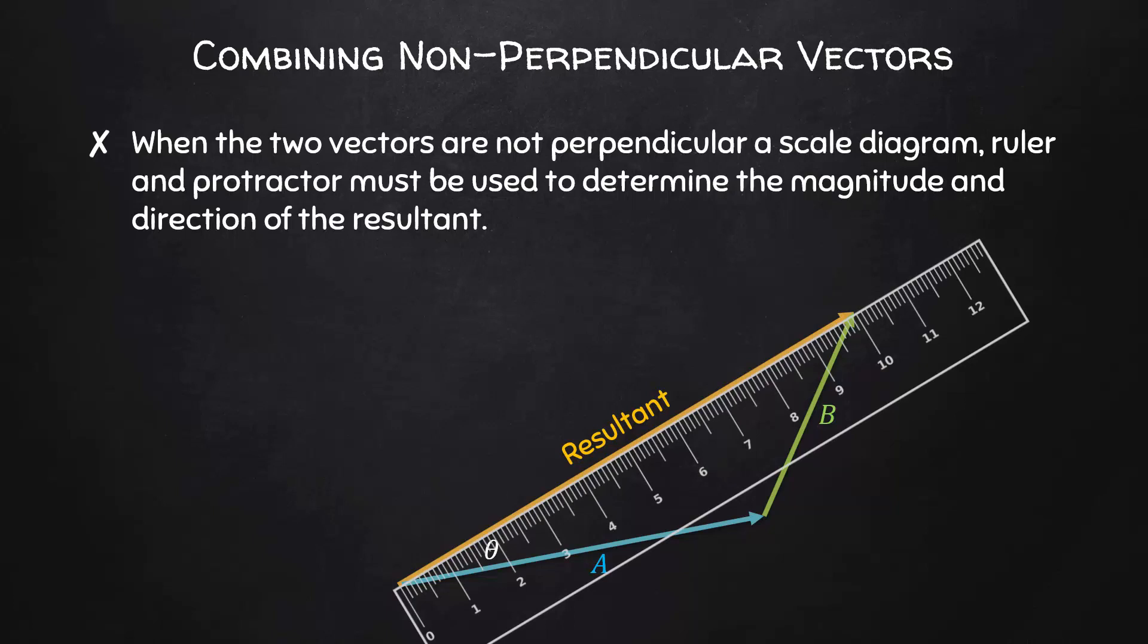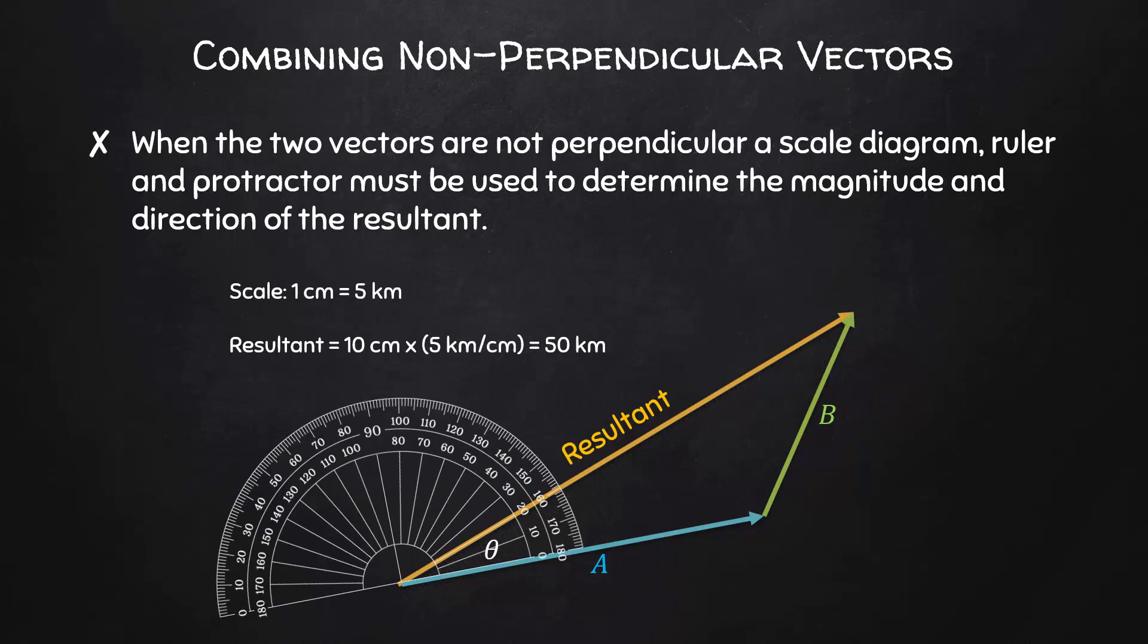In this example, the resultant is 10 centimeters long. If our diagram is drawn to a scale of 1 centimeter equals 5 kilometers, then our resultant represents 50 kilometers. We can use a protractor to measure the number of degrees between the resultant and vector A, in this case, about 20 degrees.